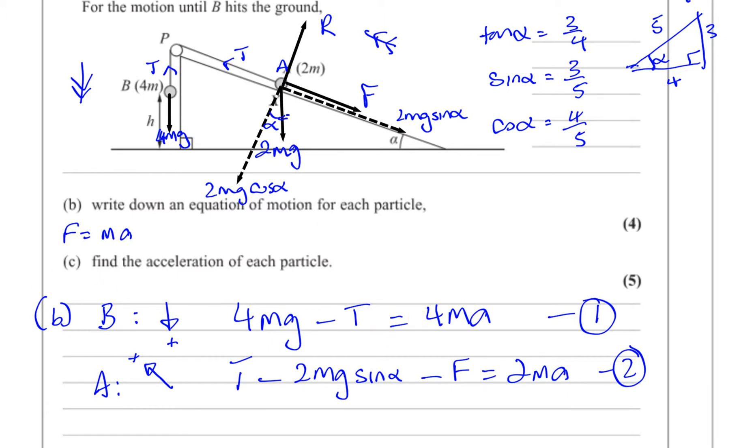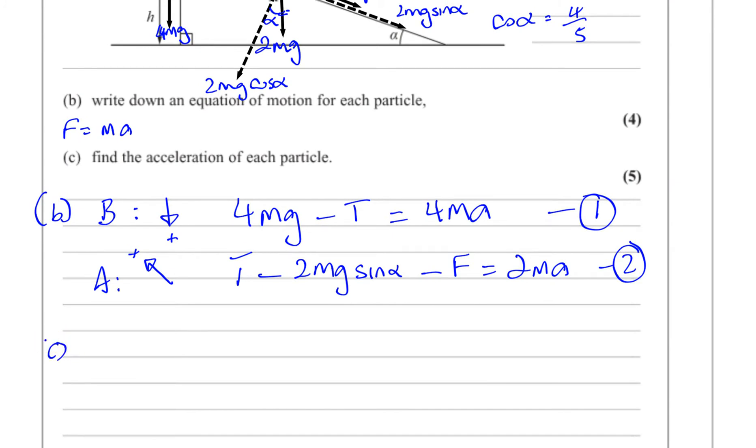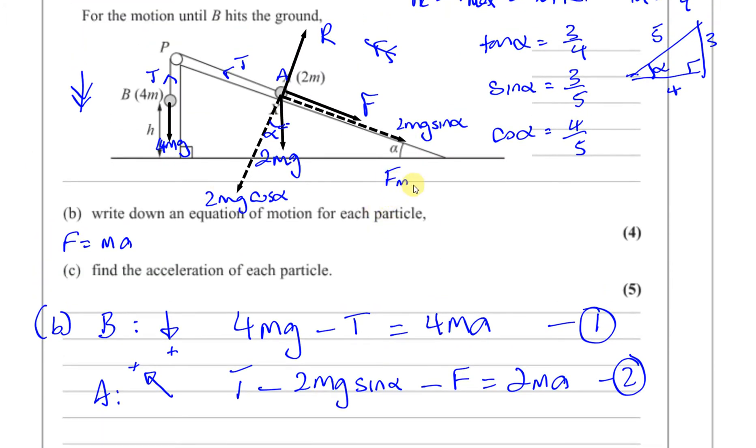And what I'm going to do now is I'm going to find the acceleration of each particle. So for part C, I need to find what A is. But before I can do that, I need to find what F is. And we know that F max is mu R. So we need to find what R is. Now to find what R is, what I'm going to do is I'm going to resolve perpendicular to the plane. So I have R is equal to 2mg cosine alpha. Now I know cosine alpha is four-fifths. So R is going to be 2mg times four-fifths, which gives us 8mg over five. And we know that F is equal to mu times R. Mu is a quarter. So you have a quarter times 8mg over five. So the frictional force acting here is going to be 2mg over five.